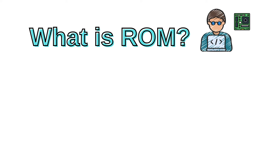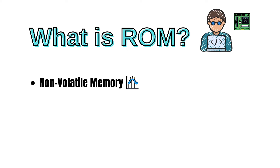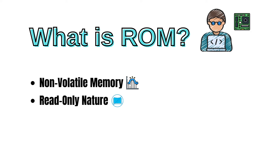Here are some key points about ROM. ROM is non-volatile, meaning that it retains its data even when the power is turned off. This is in contrast to volatile memory like RAM, which loses its data when the power is cut. The term Read-Only indicates that the data stored in ROM is generally meant to be read and not written to or modified by normal computer processes. The data is usually programmed onto the ROM chip during the manufacturing process and is intended to remain unchanged throughout the life of the device.